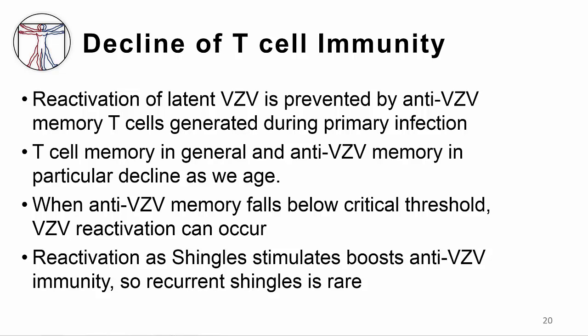Why do people develop shingles? The virus and the immune system are in balance throughout people's lives. Reactivation of latent VZV is prevented by memory T cells generated during primary infection. As we age, T cell memory in general and anti-VZV memory declines. When the number and function of memory T cells fall below a critical threshold, VZV reactivation occurs. This reactivation and development of disease boosts anti-VZV immunity, making recurrent shingles rare unless the patient has an underlying immune problem like cancer or HIV.